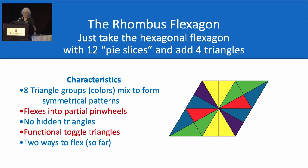Our rhombus has eight triangle groups or eight colors. It can flex into partial pinwheels. There aren't hidden triangles that never show up when you are flexing. It has toggle triangles that work. In other words, the toggle triangles are pairs of triangles that are unattached at one vertex, and they can swing back and forth and create a shape change. And with this flexagon, you can flex through that shape change. And I found two ways to flex so far.